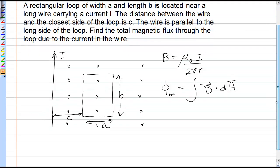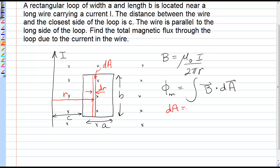In order to choose the area element, we choose an element where B will be constant, and so that would be a vertical strip of this loop — this vertical strip will be dA. The distance from the wire to the strip will be R, and the thickness of the strip will be dr. So we can see from the geometry that dA is just equal to the length of the strip times the width of the strip: B times dr.